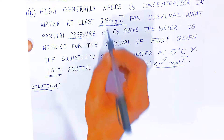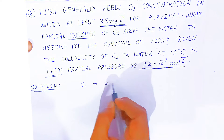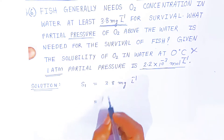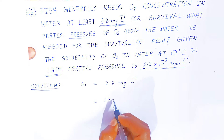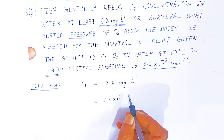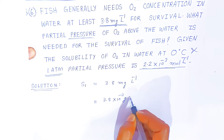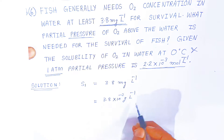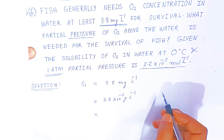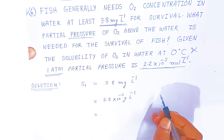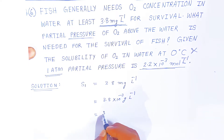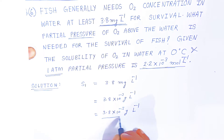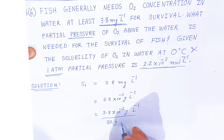The solubility S1 is given as 3.8 mg per litre. You have to convert this by dividing by 1000, so 3.8 divided by 1000 gives 3.8 × 10⁻³ — it is now converted into gram per litre. Now because we have to find moles, you have to divide by the molar mass. The molar mass of oxygen: oxygen molecule is made up of 2 oxygen atoms, so 16 + 16 = 32. So 3.8 × 10⁻³ gram per litre divided by 32 gram per mole.